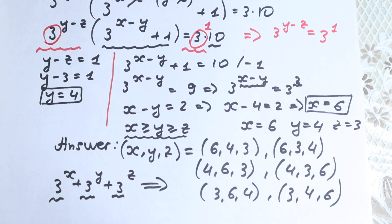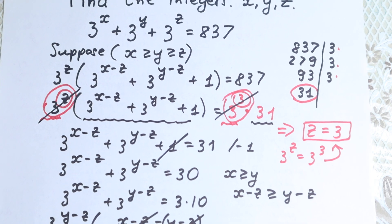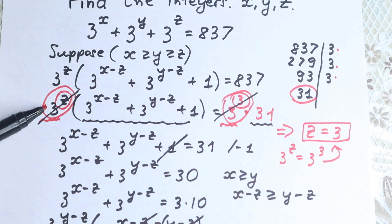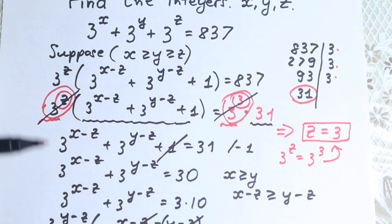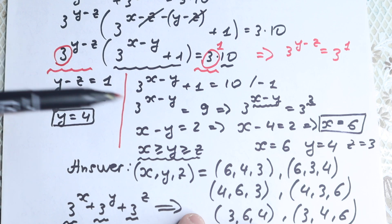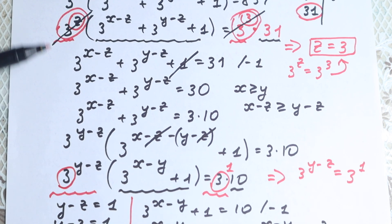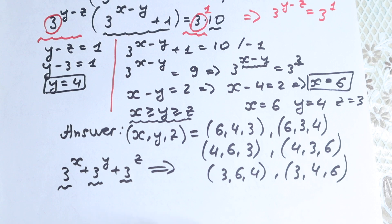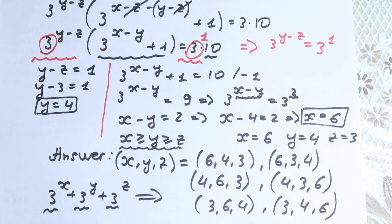This is my solution to this problem. To recap: first we factored 3 to the power z, which gave us z equals 3 by matching with 3 cubed in the factored form of 837. Second step, we factored 3 to the power y minus z. The last step was a classic exponential equation. I hope you understand this explanation. Write your questions in the comment section — I wish you all the best in your mathematics adventures, thank you and have a great day!